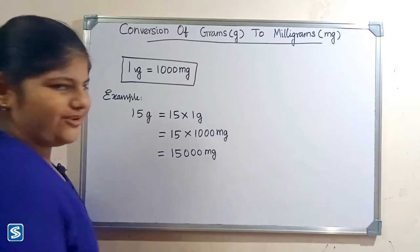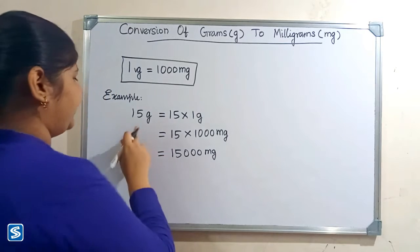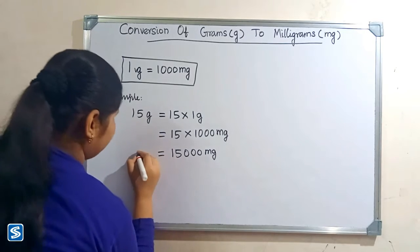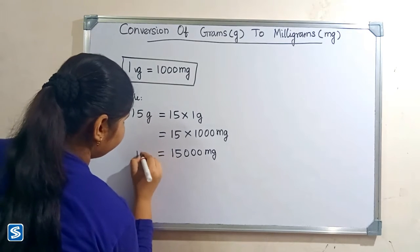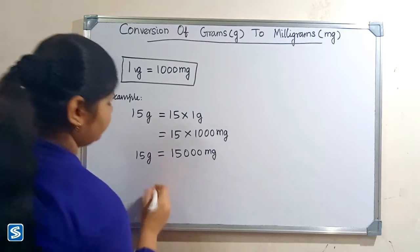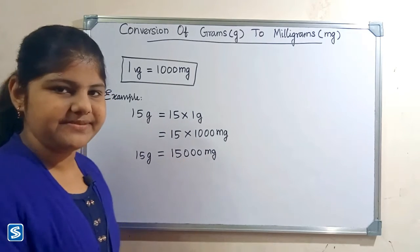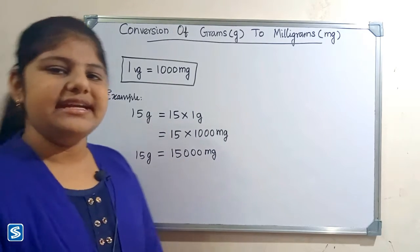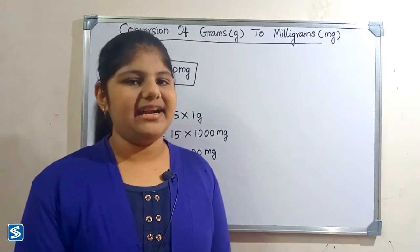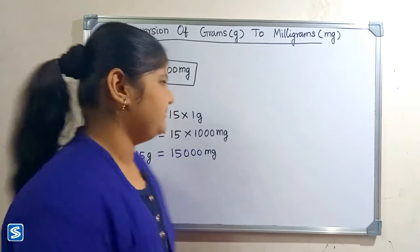So 15 grams is equal to 15,000 milligrams. Next we will take another example.